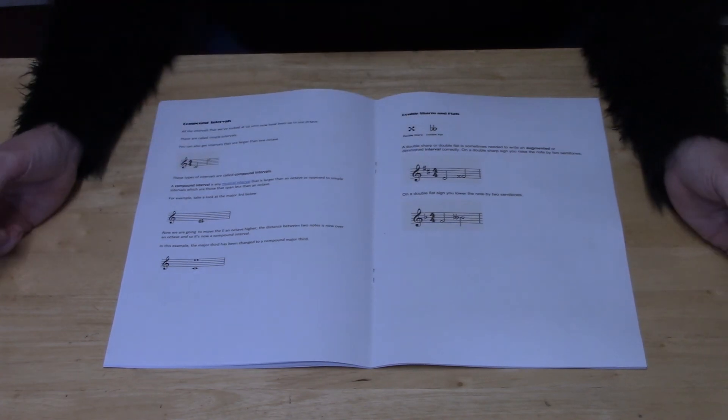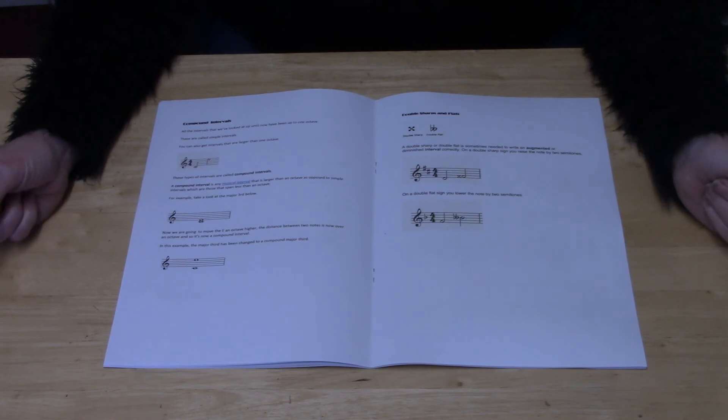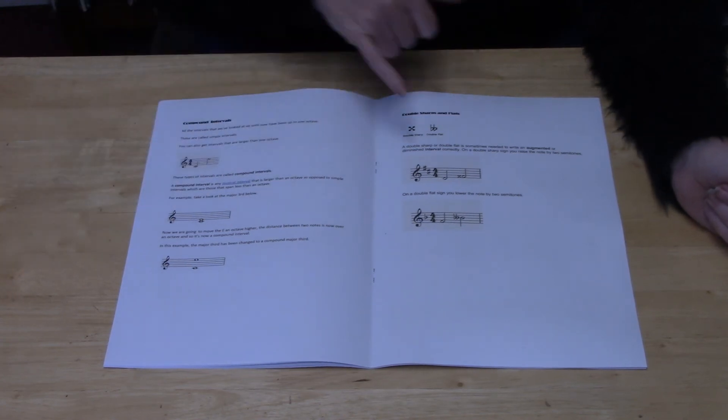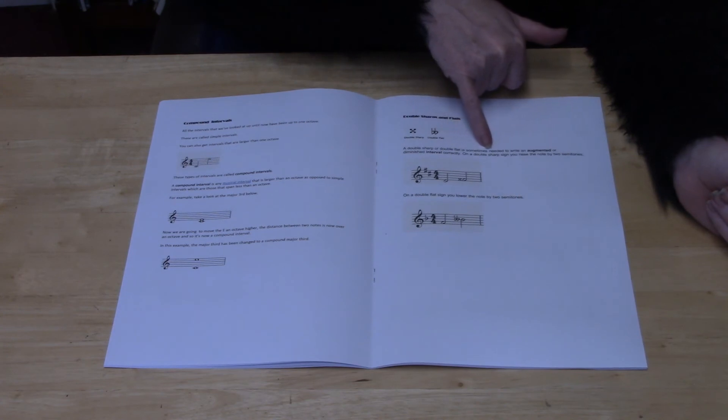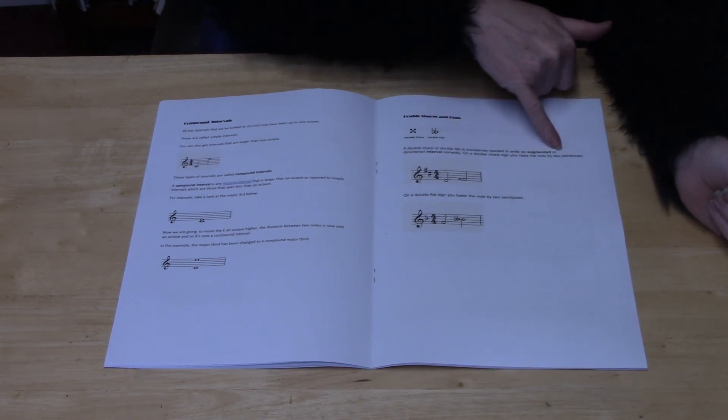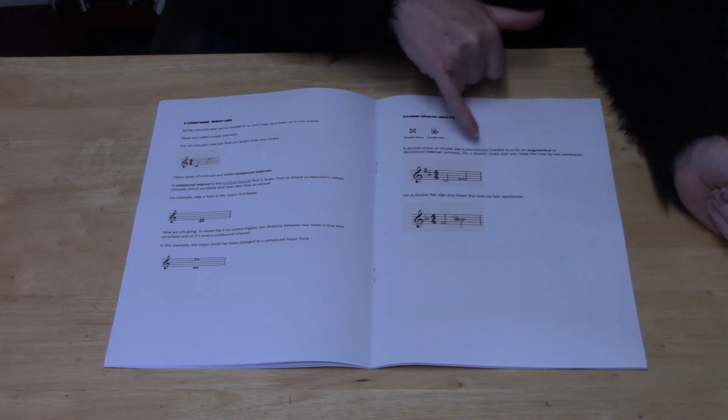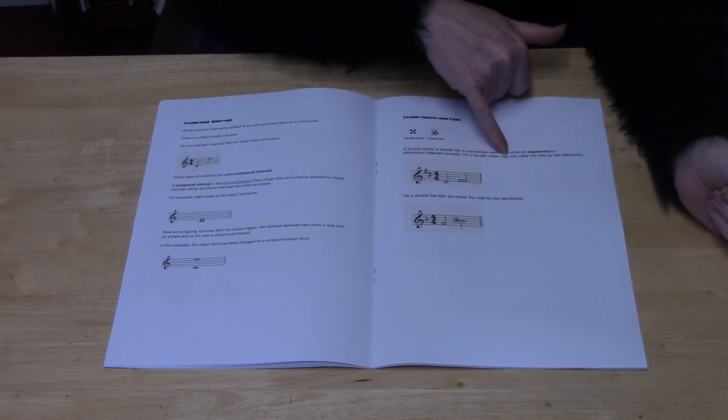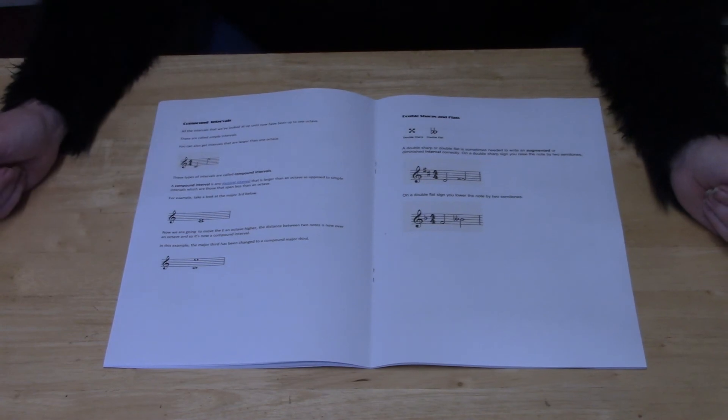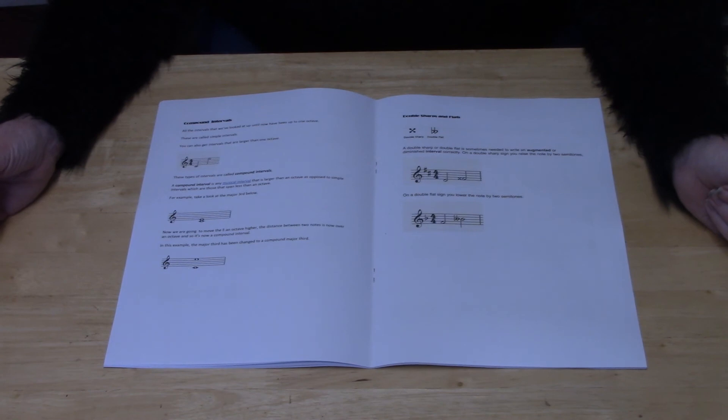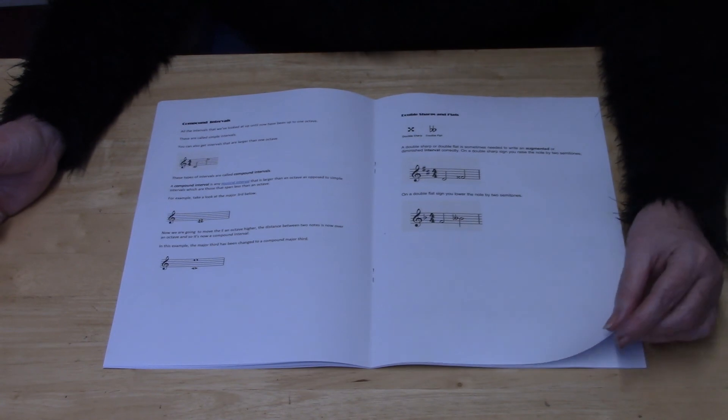Then you go on to a section which looks at double sharps and double flats. A double sharp or double flat sign is sometimes needed to write an augmented or diminished interval correctly. A double sharp sign raises the note by two semitones, and there's an example here of a double sharp written. A double flat sign lowers the note by two semitones, as shown by the example here.